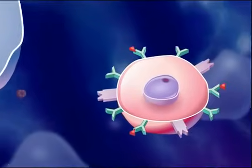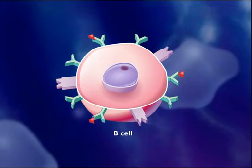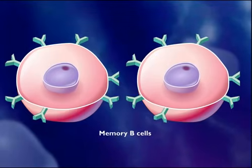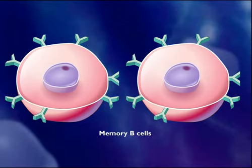Some of the B-cells do not turn into antibody factories, but instead become memory B-cells that may survive for several decades. Because of these memory B-cells, the secondary immune response to a future infection by the same pathogen is swifter and stronger. This powerful secondary immune response is what gives immunity to some diseases after you have had them once or after you have been vaccinated.